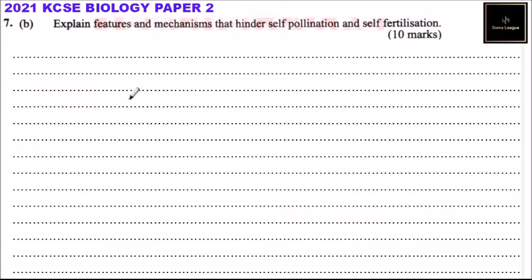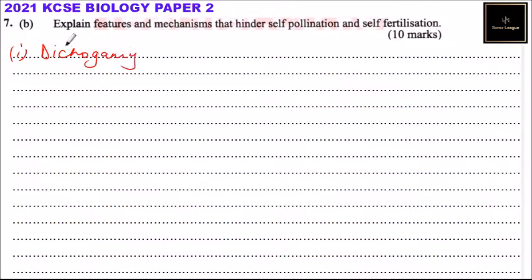Question number 7b: explain features and mechanisms that hinder self-pollination and self-fertilization. Number one is dichogamy. This is a flowering system in which male and female reproductive organs mature at different times.